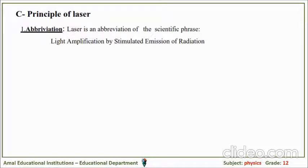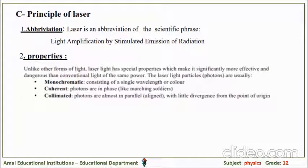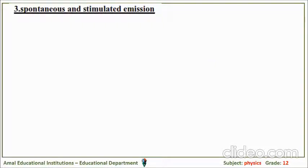Finally, the principle of the laser for General Science: LASER is the abbreviation for Light Amplification by Stimulated Emission of Radiation. Properties of laser light: it is highly monochromatic, highly coherent — all waves are in phase — and unidirectional. There are two types of emissions: spontaneous emission and stimulated emission.